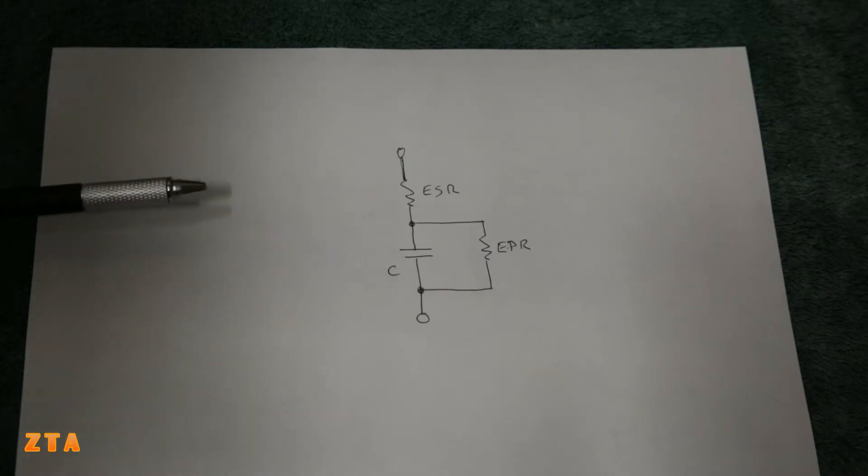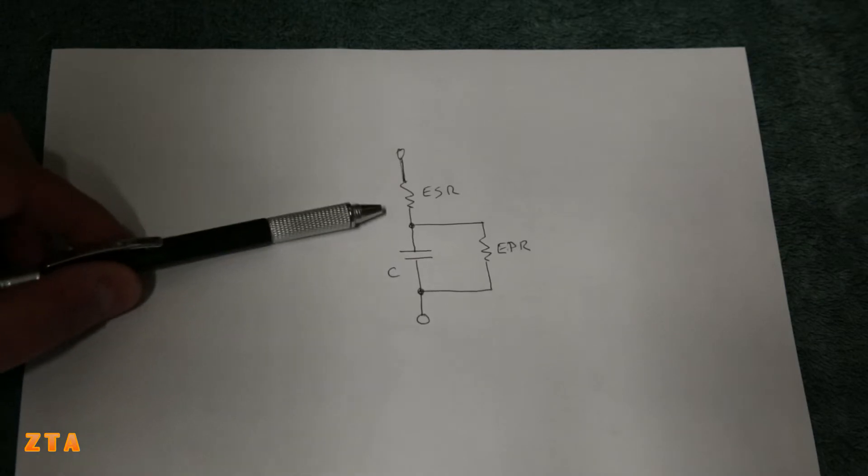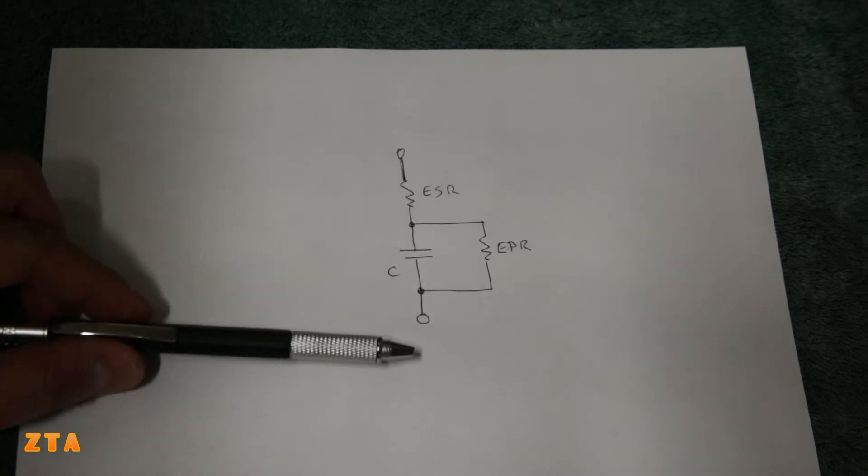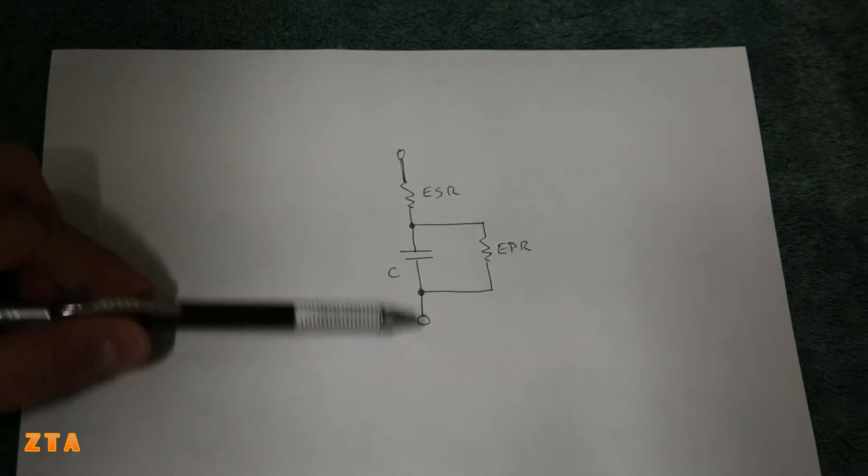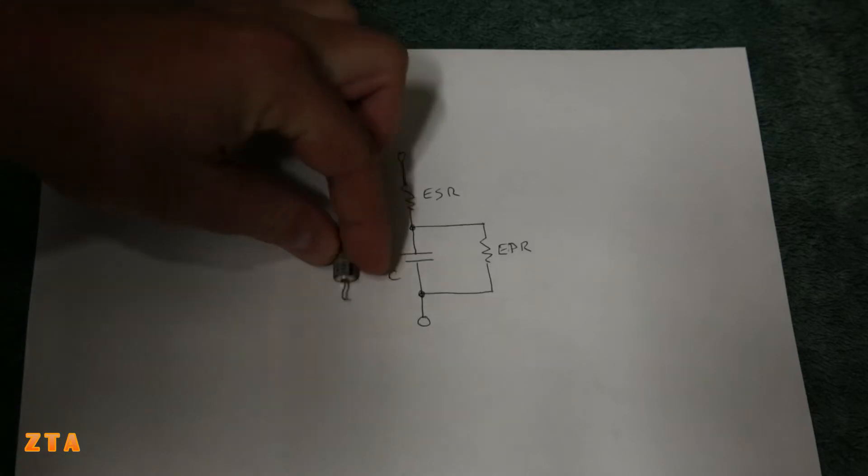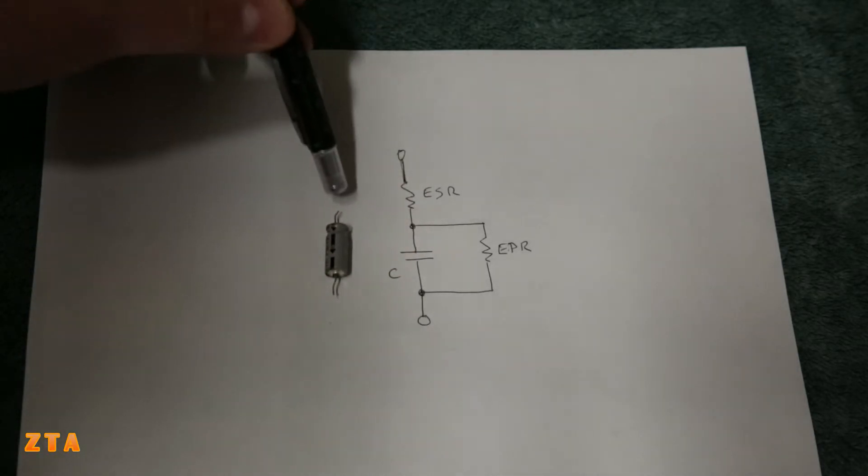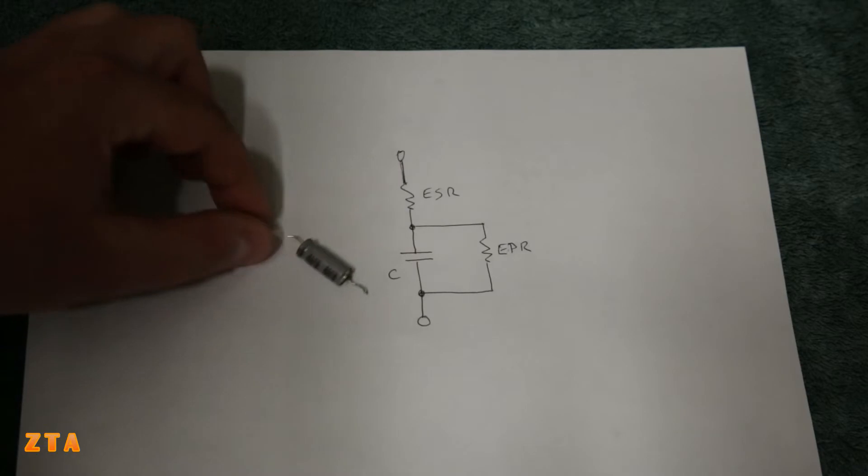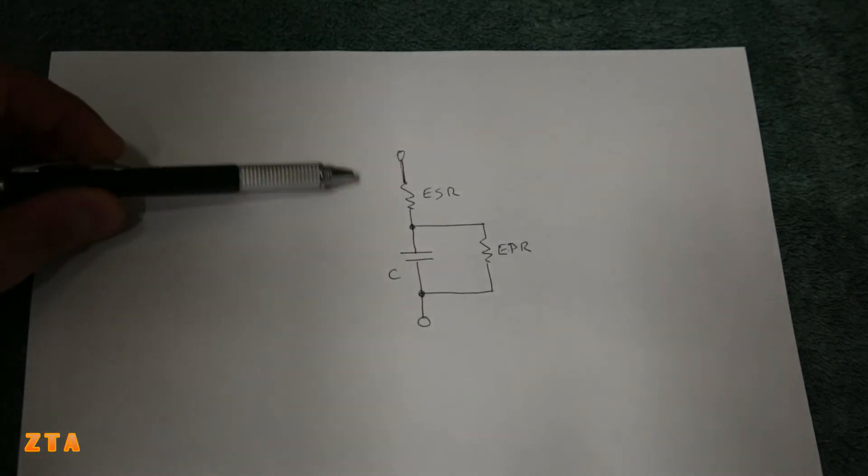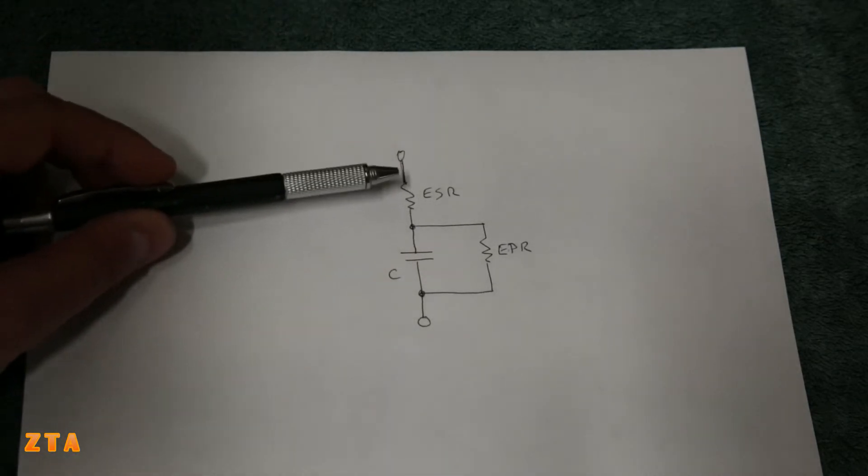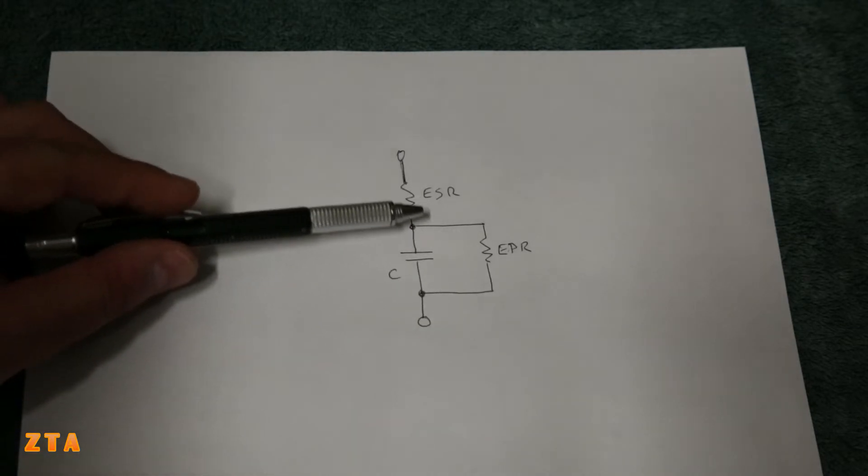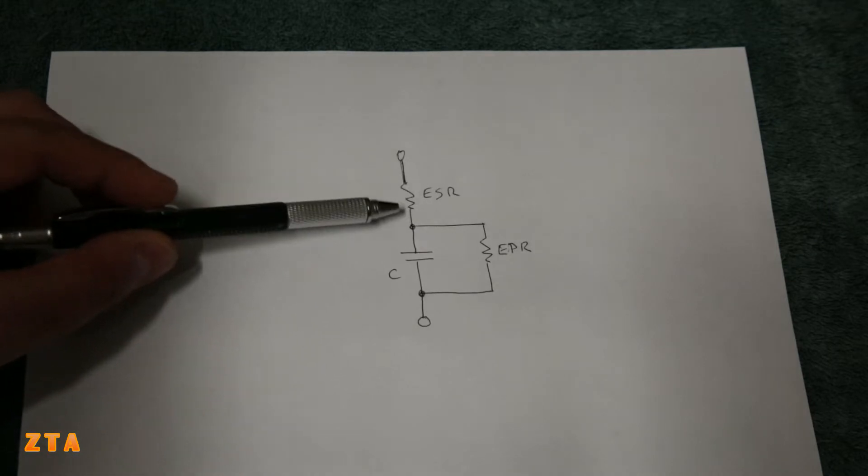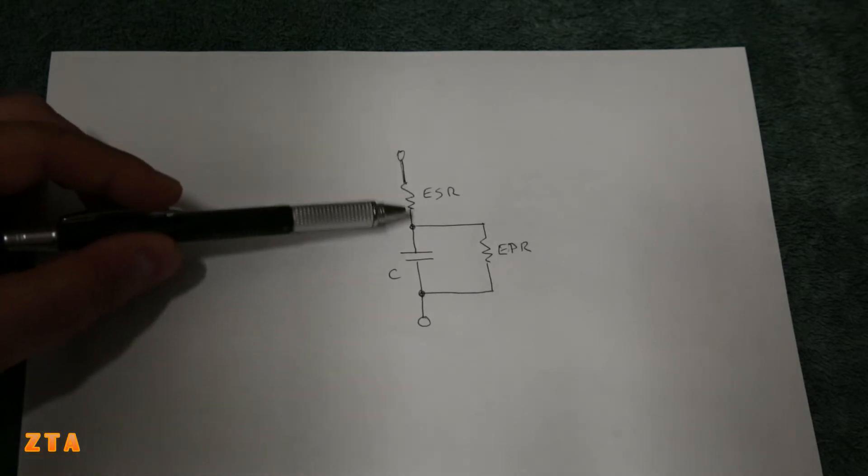Here's what we're going to be measuring with this capacitor tester. This is the equivalent circuit of a capacitor. Think of these two leads as the leads of the actual capacitor. There's two interesting resistors to measuring the capacitor. We have the equivalent series resistance, or ESR. We want this to be as low as possible, close to zero ohms.